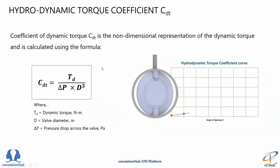In flow performance studies, hydrodynamic torque is calculated and presented in the form of hydrodynamic torque coefficient. If you concentrate on its formula, you will find that CDT comes out to be a dimensionless number.